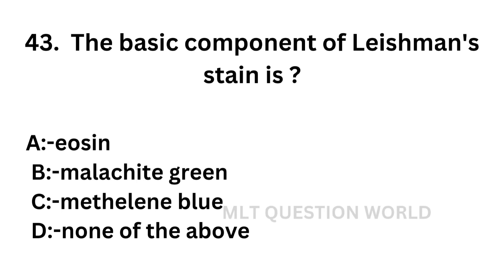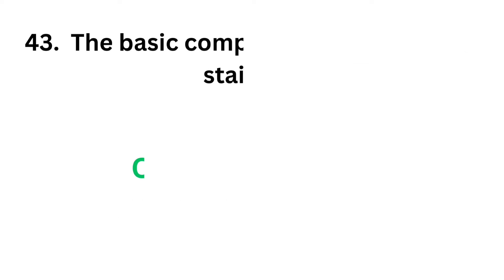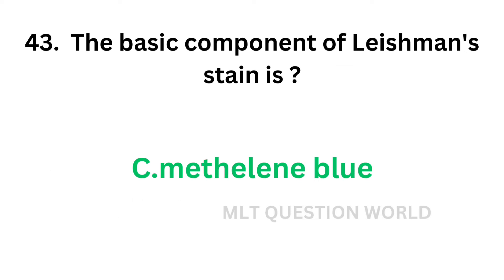Question number 43: The basic component of Leishman's stain is — option A: Eosin, option B: Malachite green, option C: Methylene blue, option D: None of the above. The correct answer is option C, methylene blue. The basic component of Leishman's stain is methylene blue.